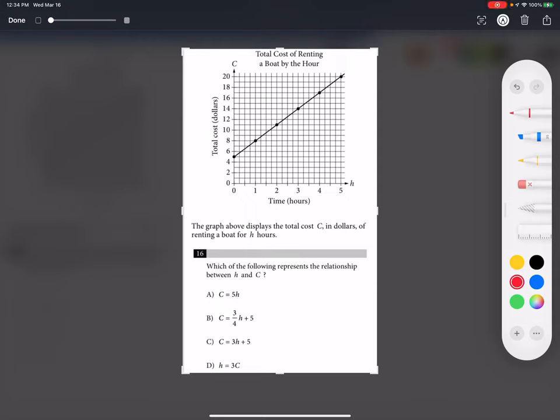Which of the following represents the relationship between H and C? The general representation of a line is given by Y = MX + B, where M is the slope and B is the Y-intercept.